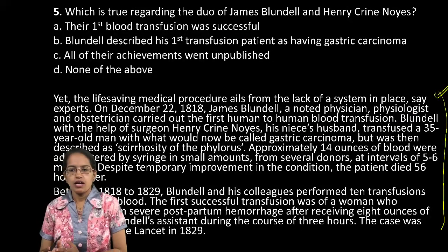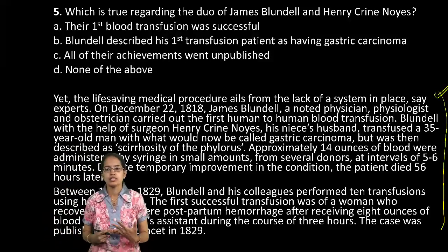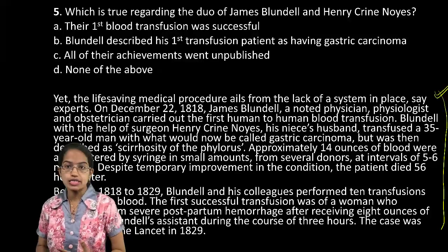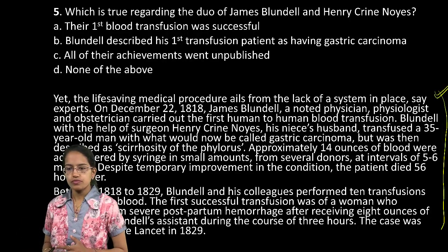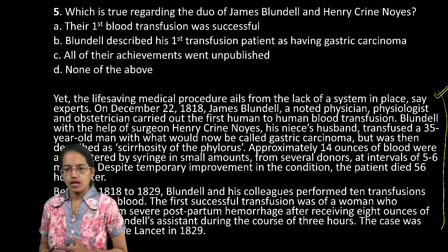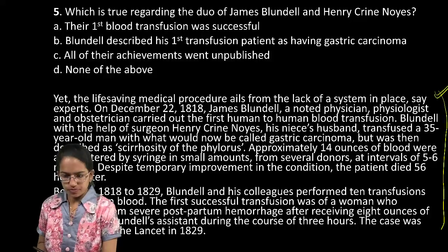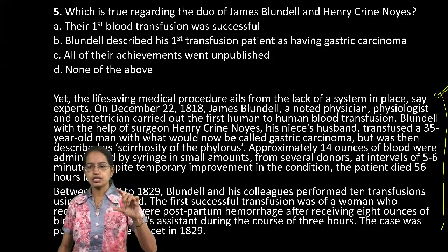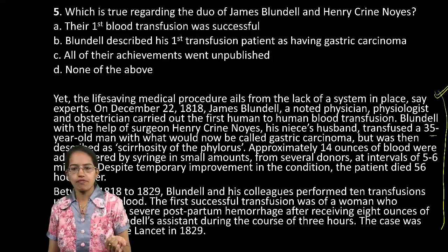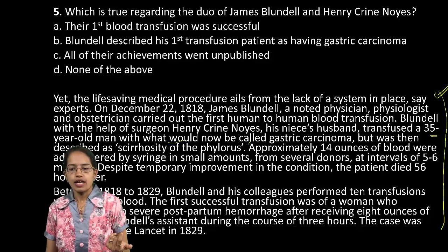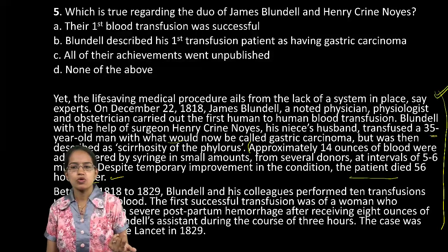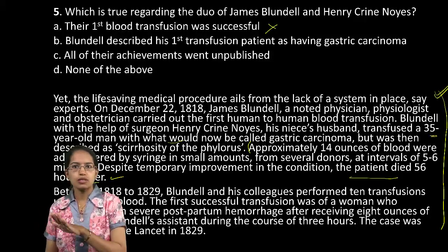Back to question five — which is true? Read the question carefully. It's not asking which is false; the question says which is true. The first thing done by both scientists was applying it to a 35-year-old man suffering from what is presently called gastric carcinoma. This patient died 56 hours later, meaning this was not successful. So the statement 'the first blood transfusion was successful' is incorrect. The second statement says Blundell described his first transfusion patient as having gastric carcinoma — again incorrect, because Noyes and Blundell did not know the term gastric carcinoma; that is what we call it presently.